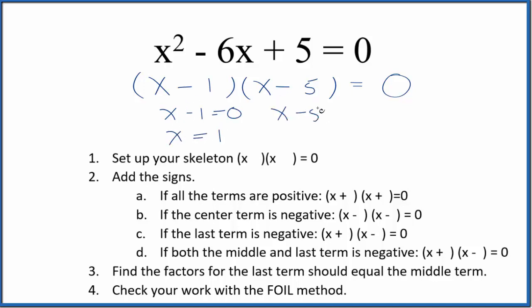Over here, we could say x minus 5 equals 0. We add 5 to both sides, x equals a positive 5.